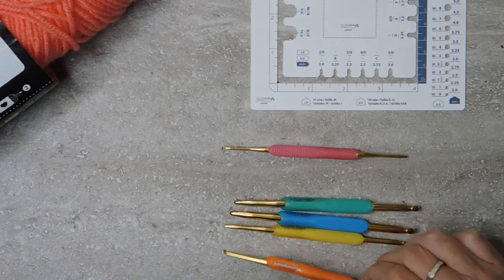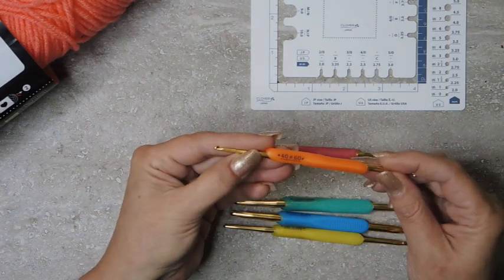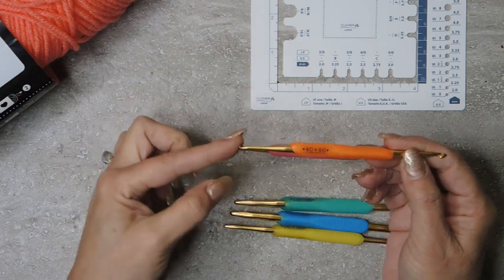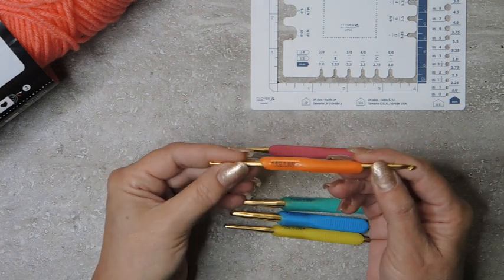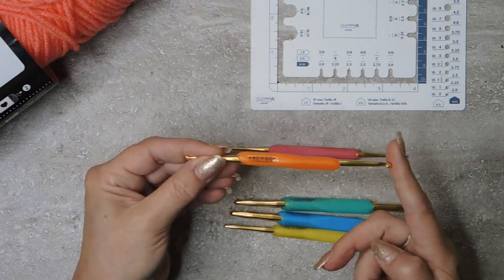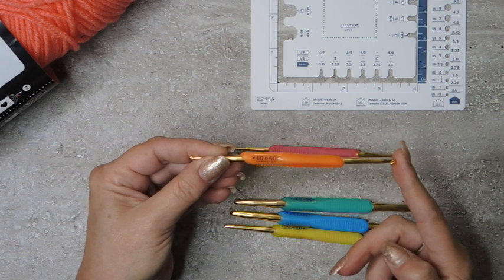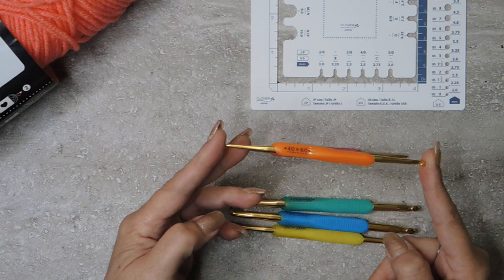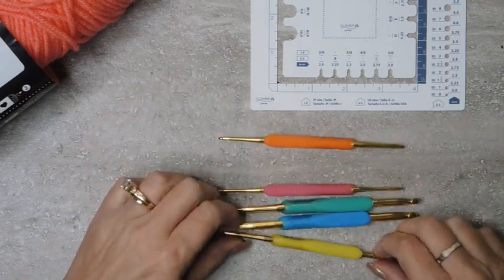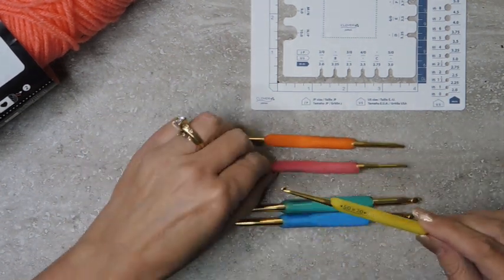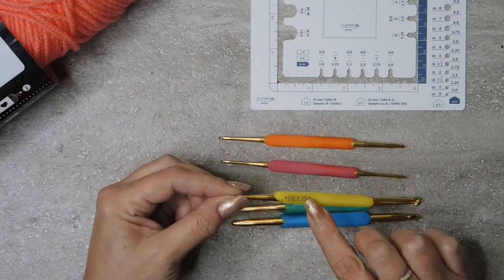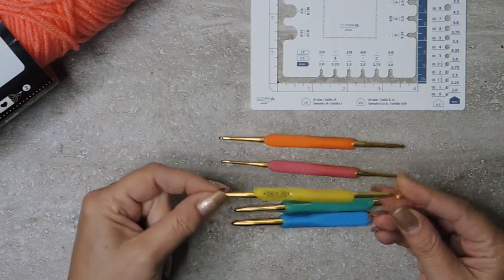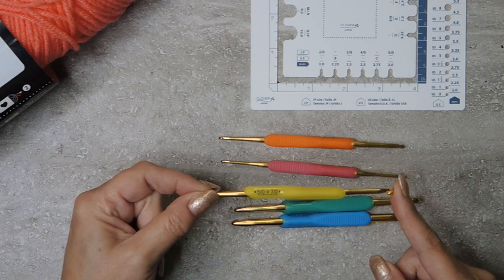And the next one this is a four on one end and a six on one end. In Japanese sizing this is a two point five millimeter and this is a three and a half. So it's a two and a half and a three and a half on the same hook. The yellow one is a five and a seven. Five on this end is really a three millimeter. Seven on this end is a four millimeter.